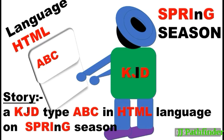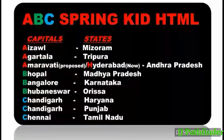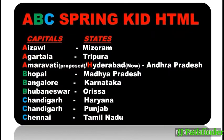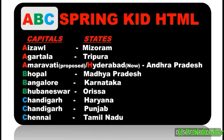The code words are: KID, ABC, HTML, SPRING. Now look at the implementation of these code words. The letters in the code words indicate the starting letters of the capitals. Firstly, consider the code word ABC — each letter in ABC indicates the starting letters of three capitals.